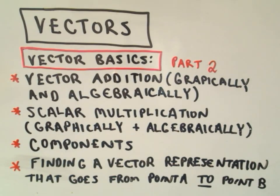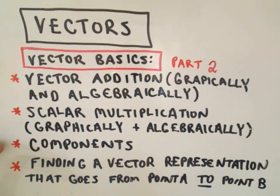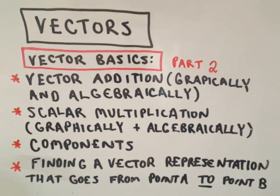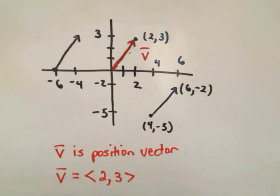This is going to be part two of my vector basics. In part one I talked about vector addition and scalar multiplication graphically. So now I just want to talk about components, doing these things algebraically, and also finding a vector representation when a vector goes from a point A to a point B.